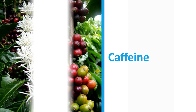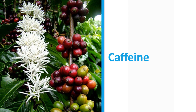Another important alkaloid is caffeine, derived from the plant Coffea arabica. It is used as a stimulant and as a natural pesticide. Stimulants are a class of drugs that speed up messages traveling between the brain and the body, making a person feel more awake, alert, confident, or energetic. Stimulants include not only caffeine but also nicotine, amphetamines, and cocaine.